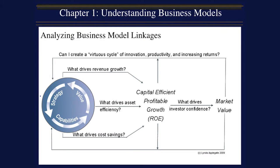Strategy is a series of choices that determine the opportunities you pursue and the market potential of those opportunities. Once strategic positioning and direction have been defined and strategic goals have been set, the next step is to assemble the resources and build the capabilities required to achieve those goals. Capabilities enable a company to execute current strategy while also providing a platform for future growth. They define the resources needed to execute strategy and, in so doing, define the cost model of an organization.